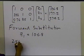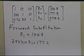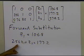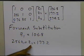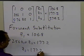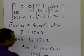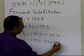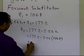The second equation is 2.56 times Z1 plus Z2 equals 177.2. Since we already found Z1, we substitute it in to find Z2. So Z2 equals 177.2 minus 2.56 times Z1, and with Z1 equal to 106.8, we get Z2 equal to minus 96.208.